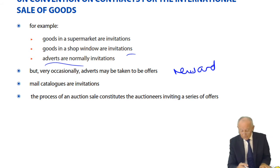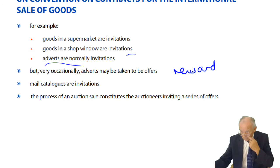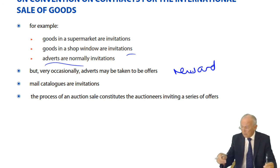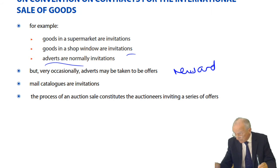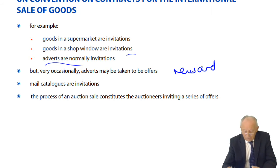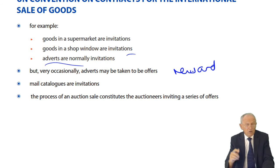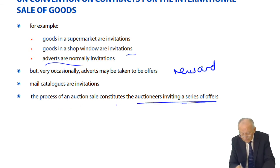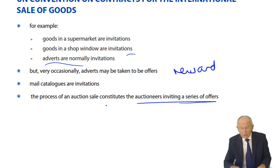The process of an auction sale constitutes the auctioneer inviting a series of offers. Bidders make successively higher offers — $2, $3, $4, $5, $5.50 — and the auctioneer can accept at any time. When the hammer comes down and the auctioneer says 'sold,' that is the acceptance of the final offer. Until the hammer falls, the series of offers continues.